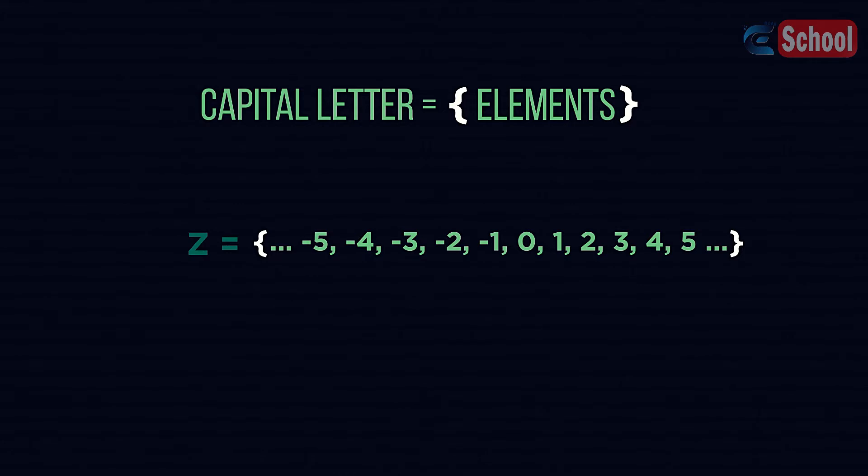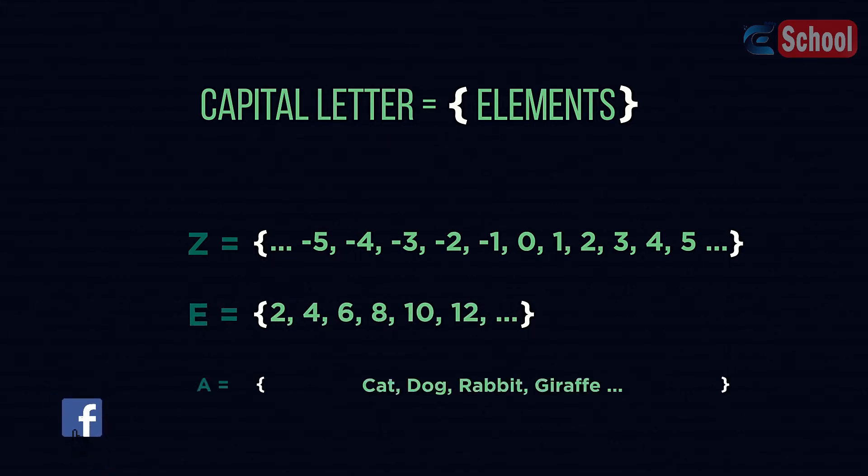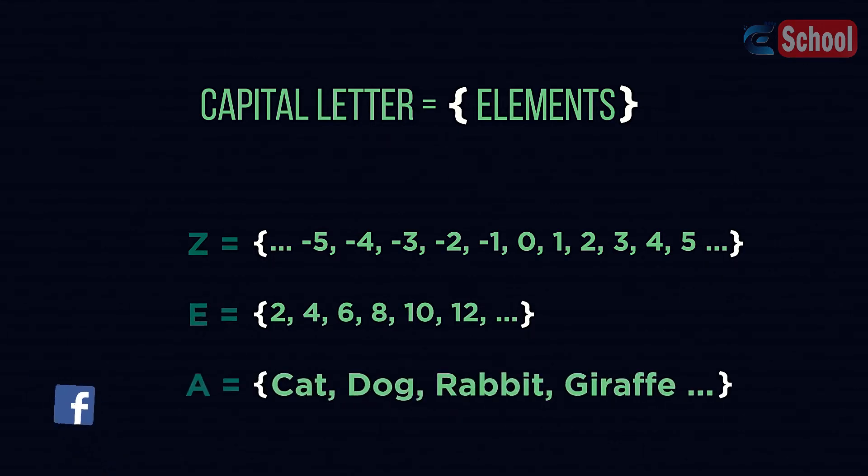We can define our sets with our own letters, for example, E for the set of even numbers. It also works for words, such as A, the set for animals.